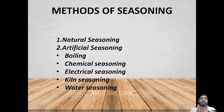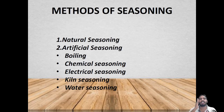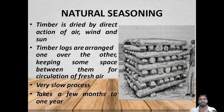Methods of seasoning are normally two types: natural and artificial. Artificial seasoning includes boiling, kiln seasoning, chemical seasoning, electrical seasoning, and water seasoning. First we will go for natural seasoning.